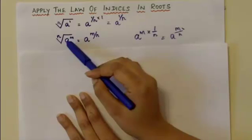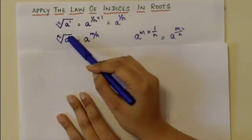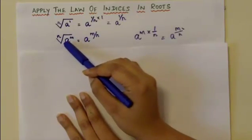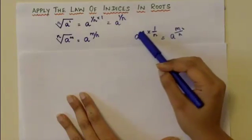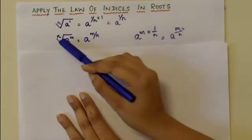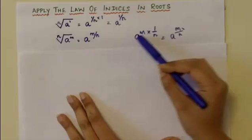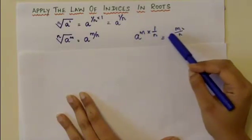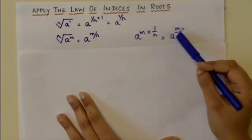In the other case, if you have the variable raised to the power of m, then it can be written as a to the power of m times 1 over n because it is the nth root. Therefore, m times 1 over n is a to the power of m over n.